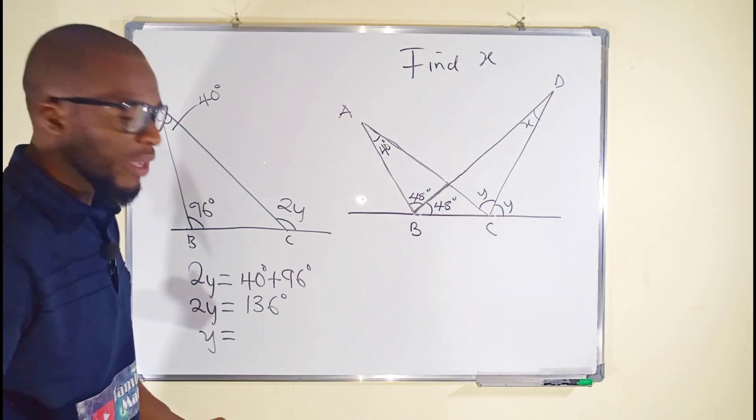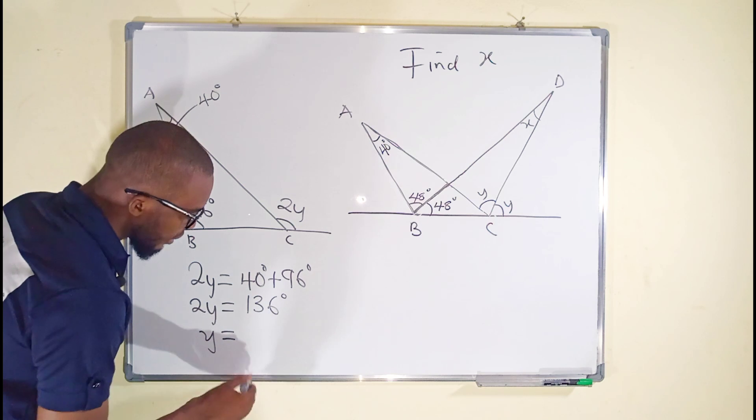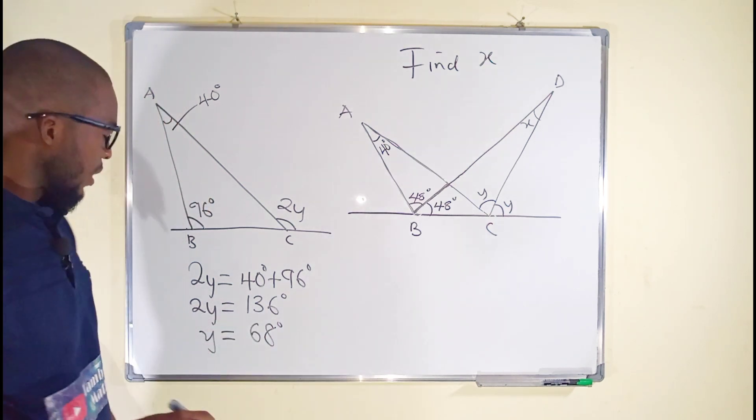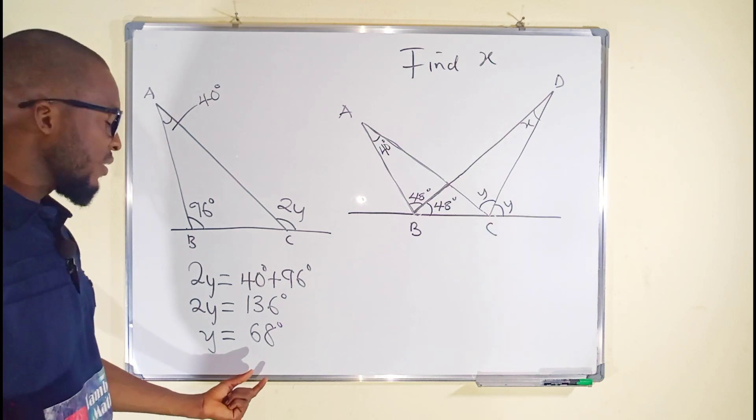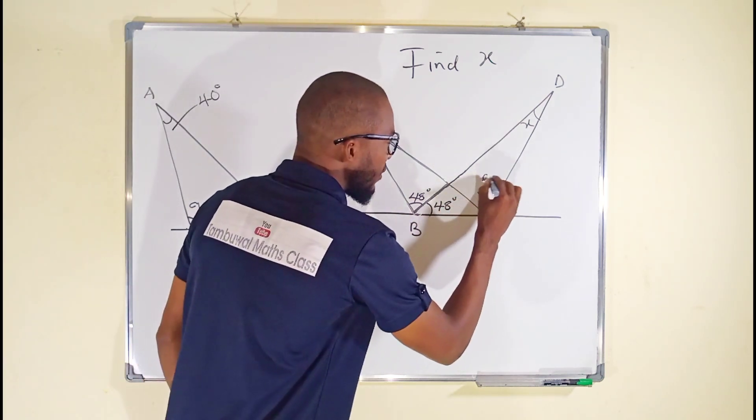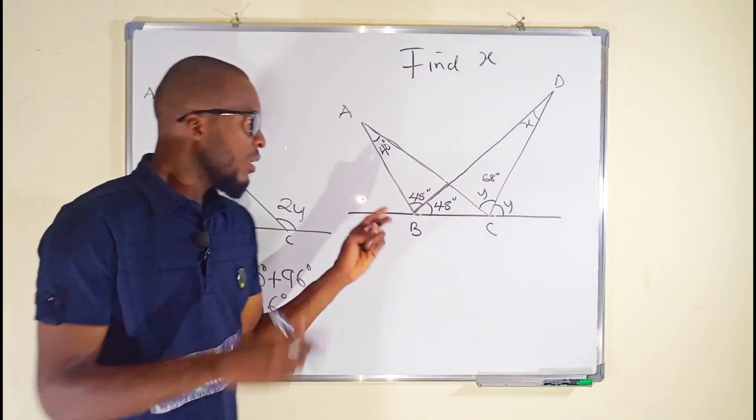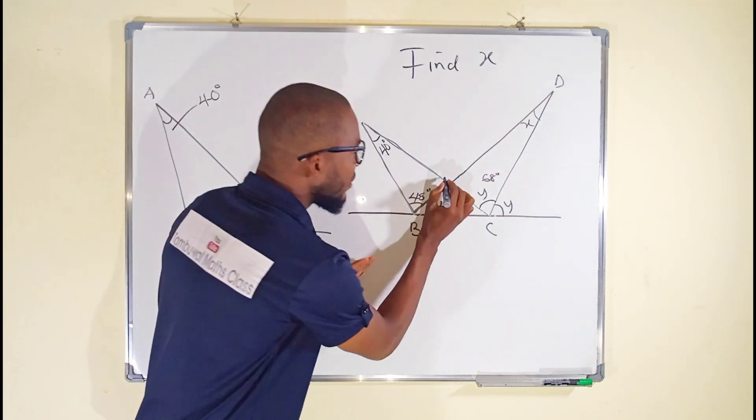And to the right, if you divide 136 by 2, you shall obtain 68 degrees. If y is equal to 68 degrees, we can write this one as 68 degrees. Let me write it very small here. Observe carefully that this is also an exterior angle of this triangle.